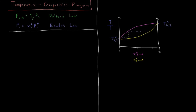This allows us to write what the total vapor pressure of the system is going to be. For a binary solution consisting of two components, that would be the liquid mole fraction of component 1 times its pure liquid vapor pressure, plus the liquid mole fraction of component 2 times its pure vapor pressure.